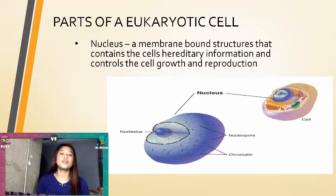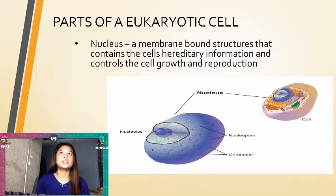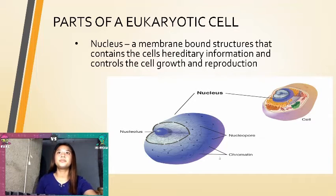Parts of a eukaryotic cell. The nucleus is a membrane-bound structure that contains the cell's hereditary information and controls the cell's growth and reproduction. This is the nucleus.